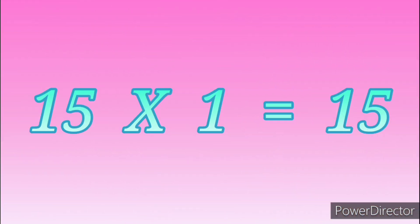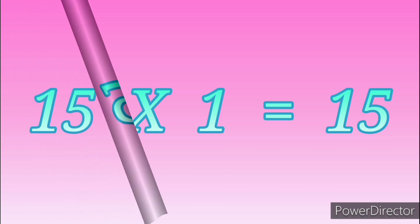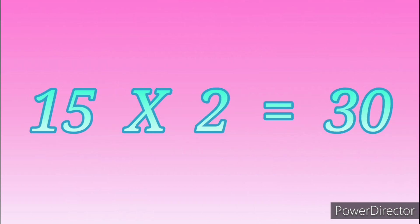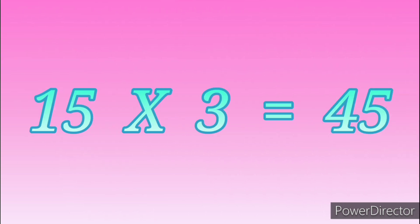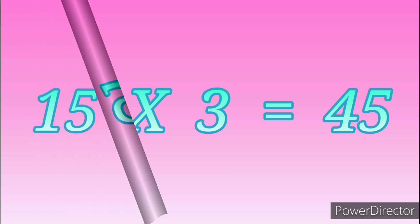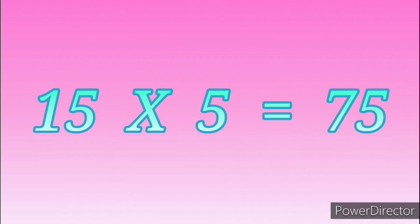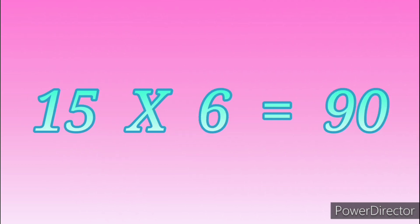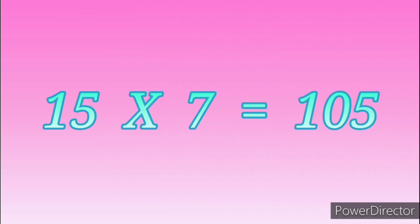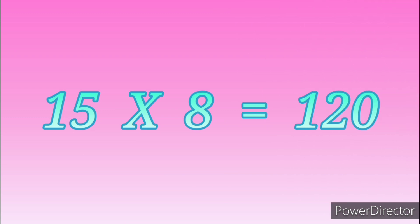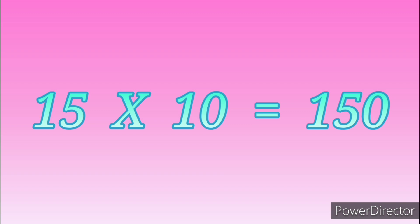Table of Fifteen: 15 ones are 15, 15 twos are 30, 15 threes are 45, 15 fours are 60, 15 fives are 75, 15 sixes are 90, 15 sevens are 105, 15 eights are 120, 15 nines are 135, 15 tens are 150.